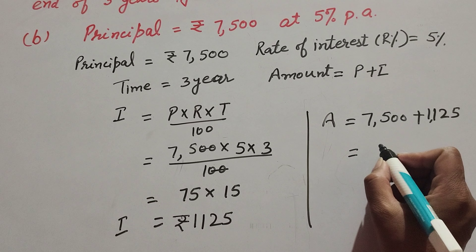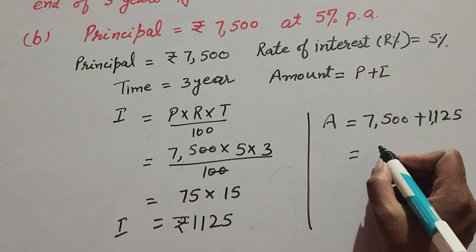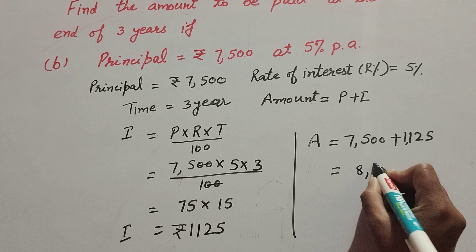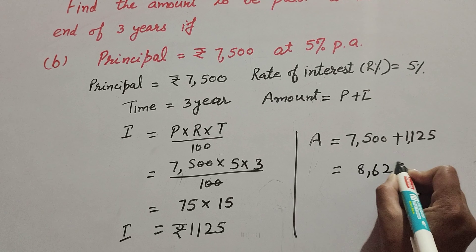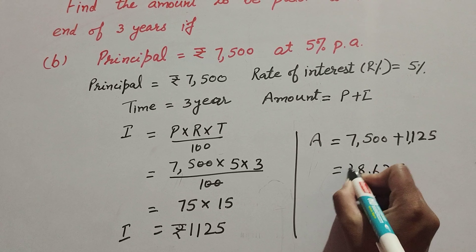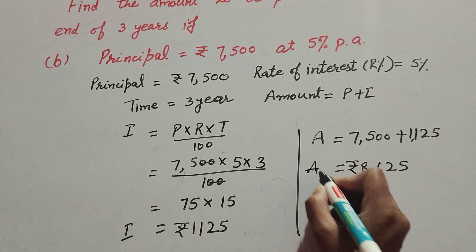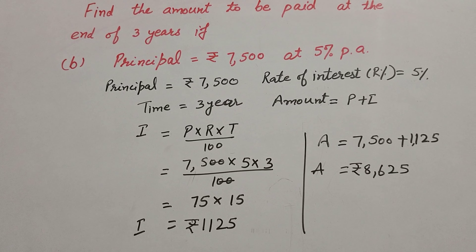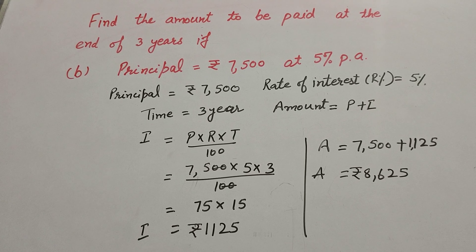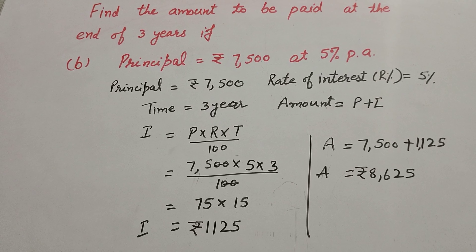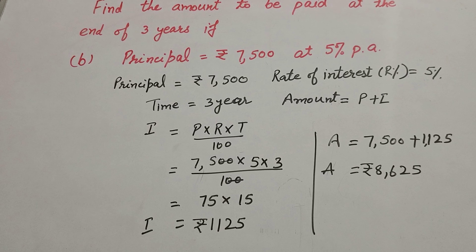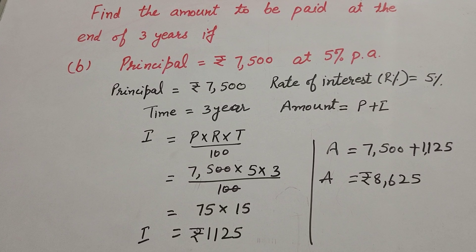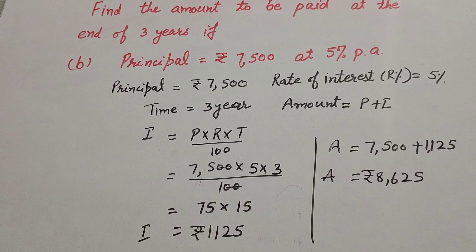Amount = 7500 + 1125 = 8625. So the amount that is paid at the end of three years is equal to rupees 8625. Thanks for watching — like, comment, share, and subscribe to my YouTube channel.